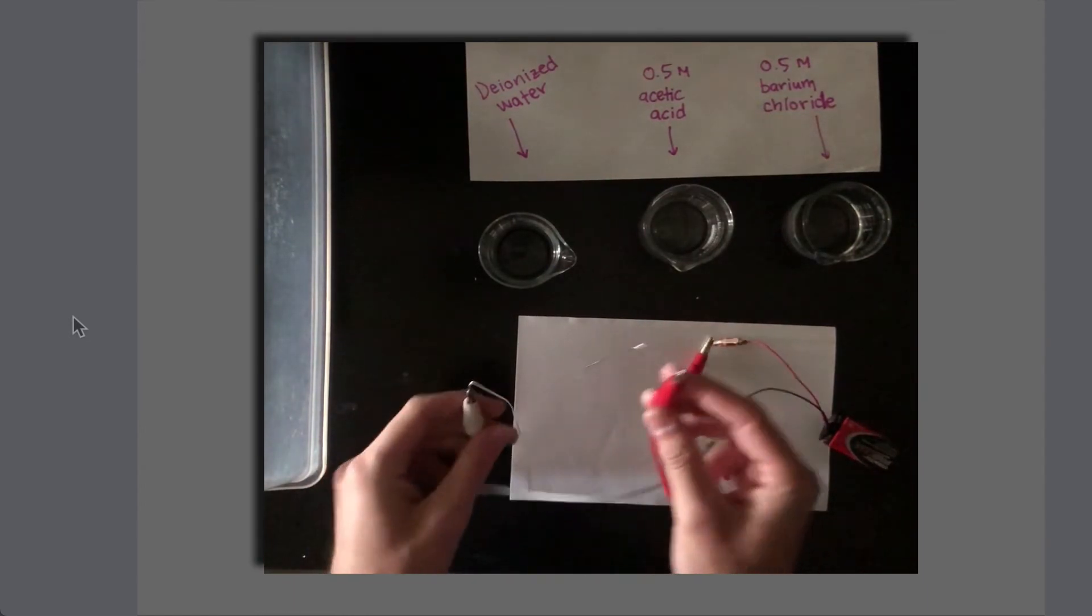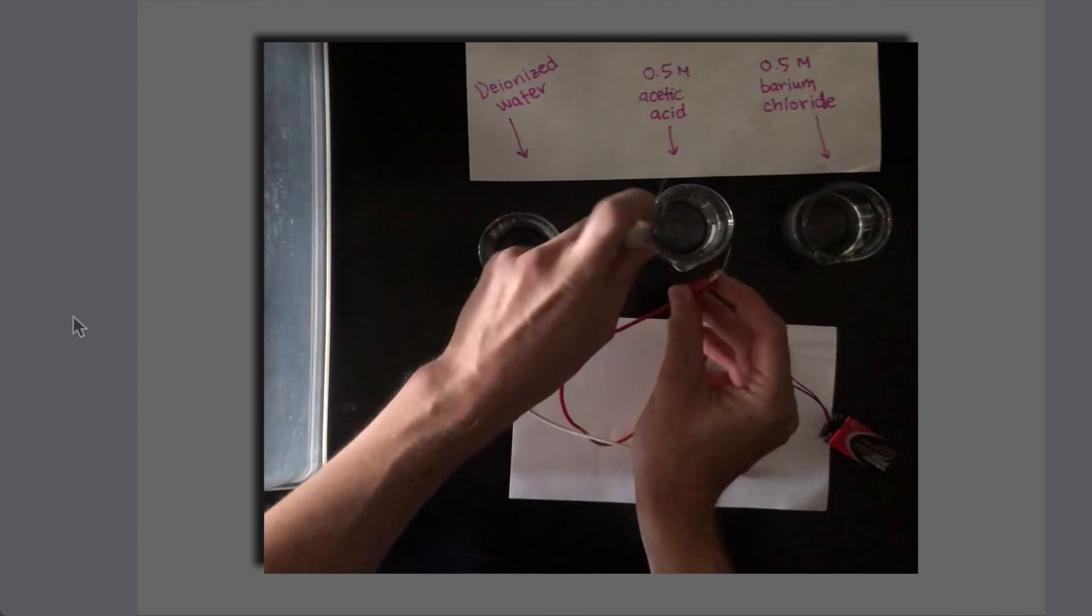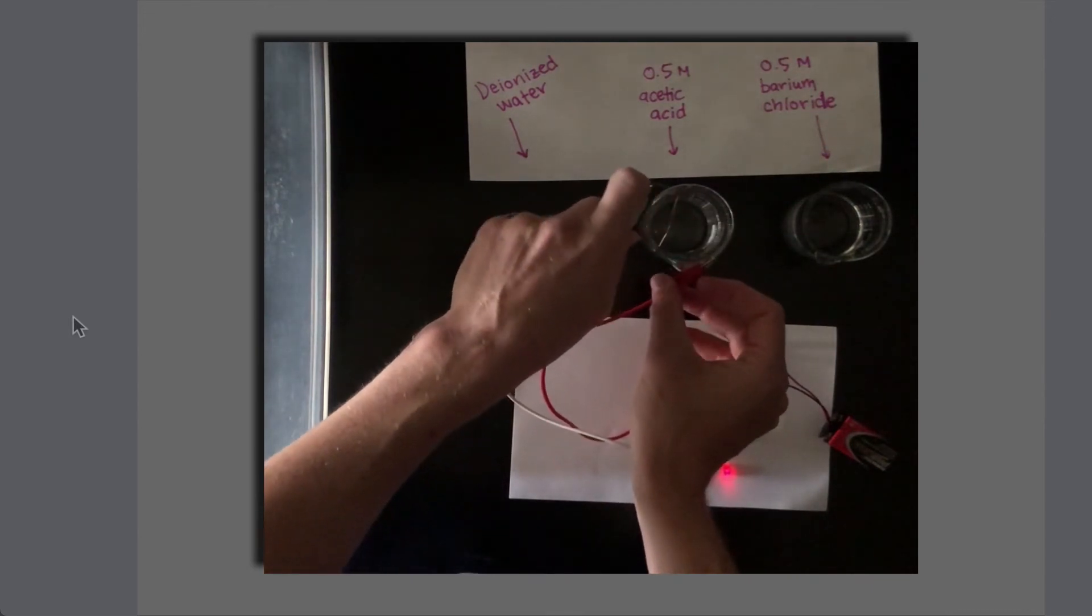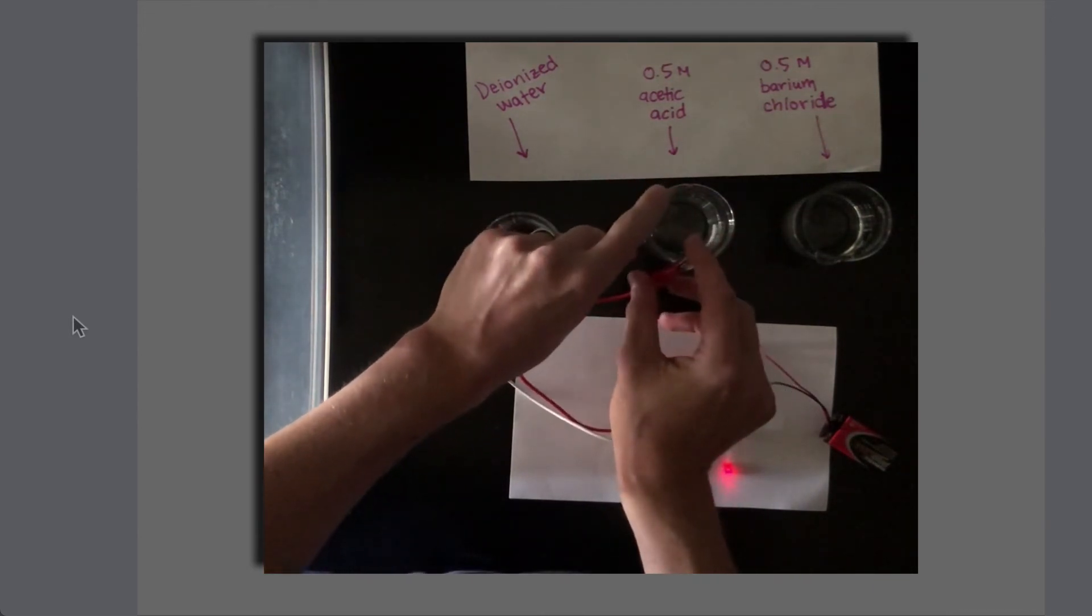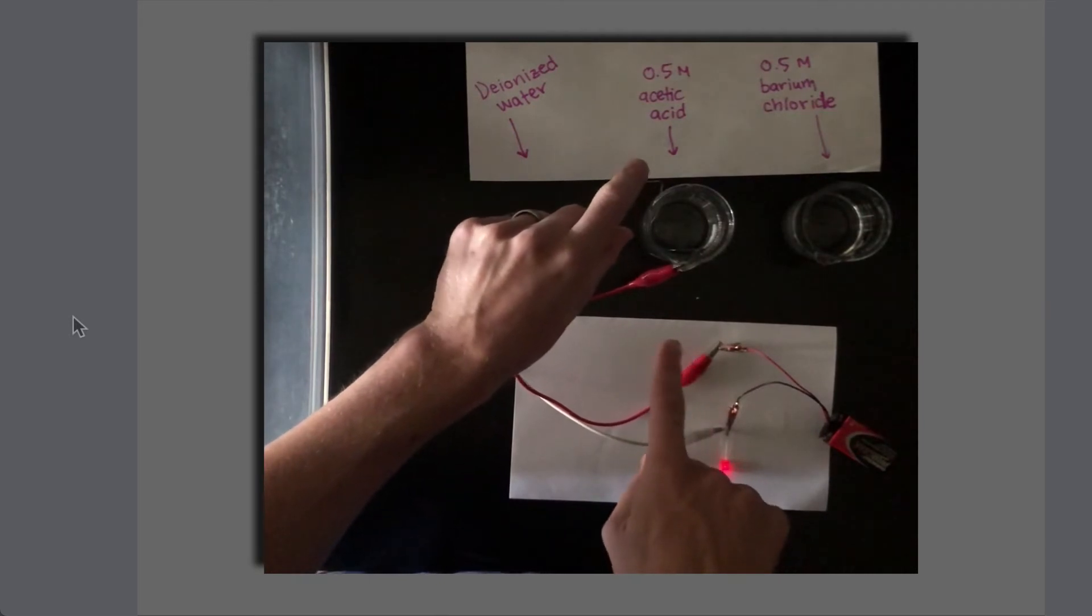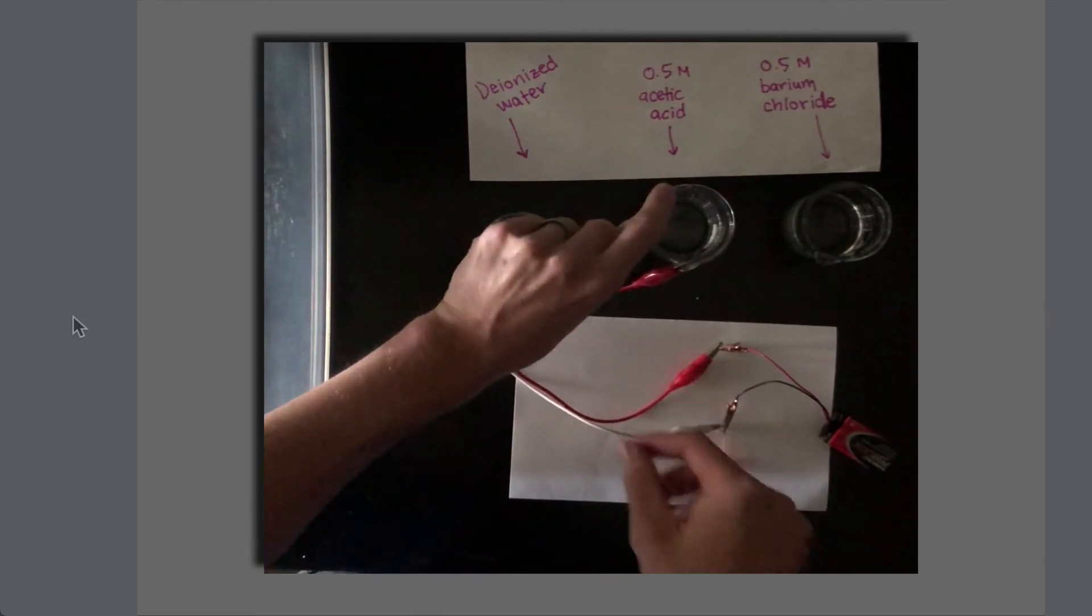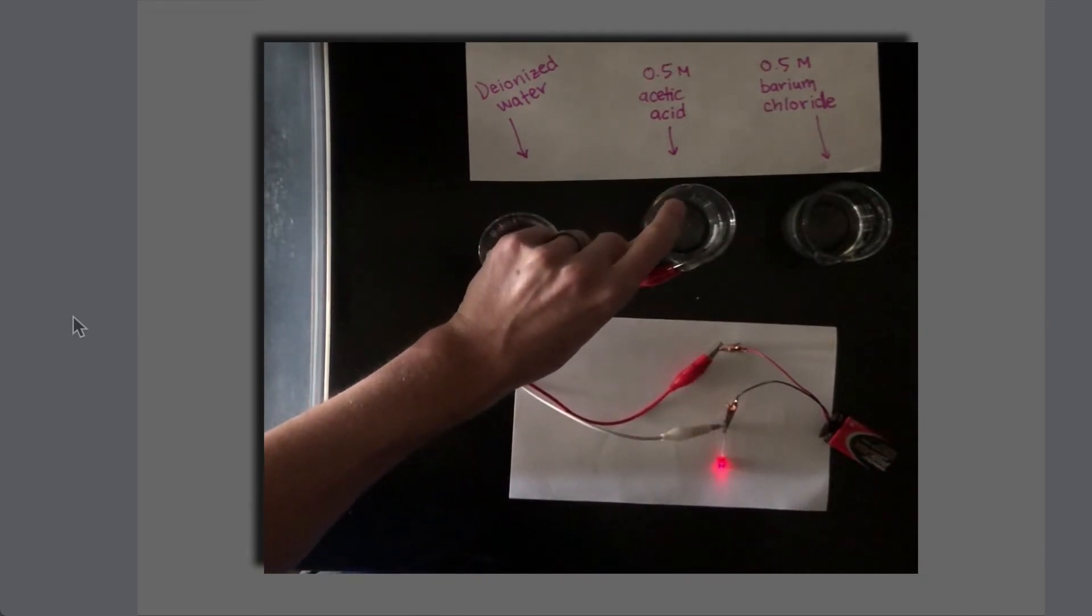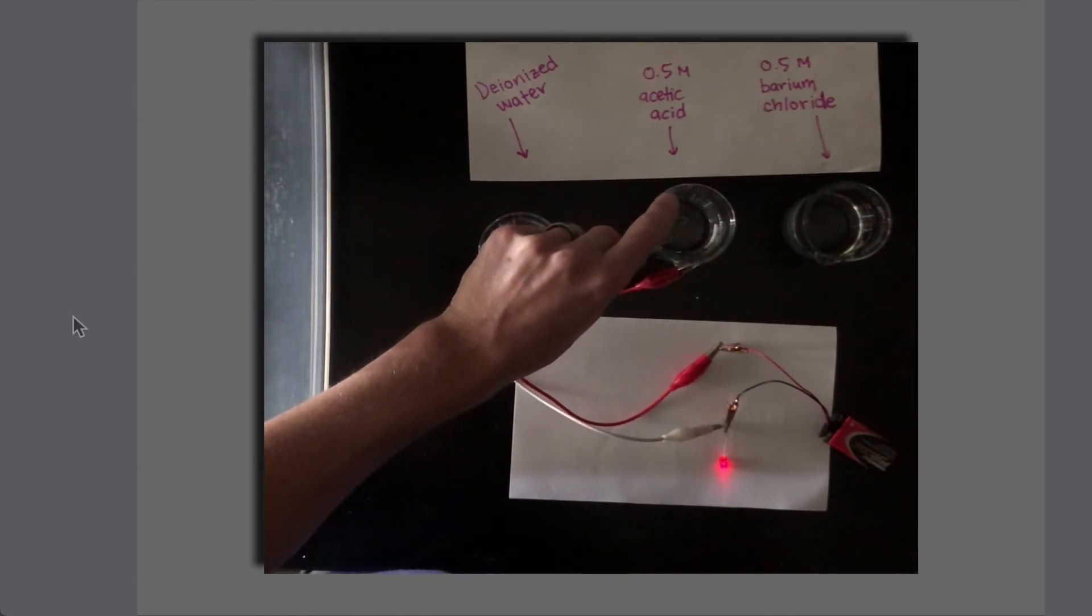Now let's try the 0.5 molar acetic acid. I'm going to insert those leads, keep them apart from one another, and you can see that even when the leads are not touching inside the beaker, the LED is still lighting up. That moment when it went off, I accidentally took one of the leads out of the liquid, but this appears to be a conductive solution to some degree.